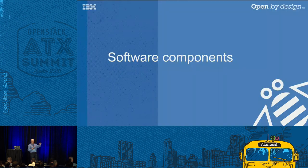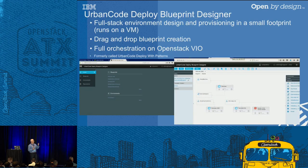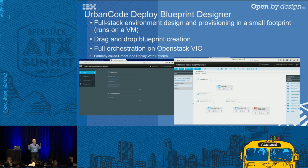We have a series of software components intended for this project. The first was Urban Code Deploy, which provided us with a blueprint designer UI that connected to VIO — VMware Integrated OpenStack — providing full orchestration. It was very interesting having a UI where you can drag and drop different agents onto objects already imported from the OpenStack cloud.